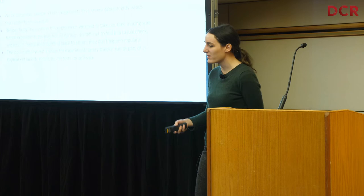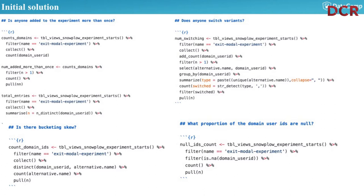The initial solution was all this R code: checking if anyone entered the experiment more than once, checking for bucketing skew, checking if everyone has a cookie, checking if anyone switched variant, checking what proportion of domain user IDs are null — just copying all these different checks into every script I was running for an experiment.